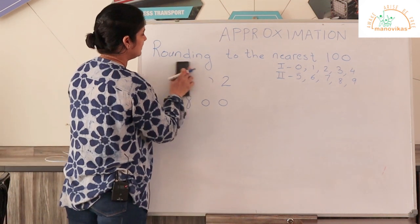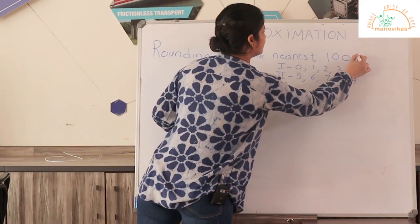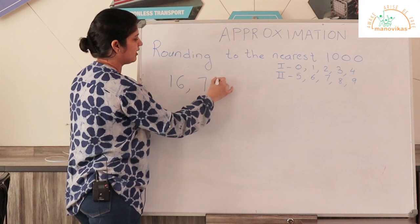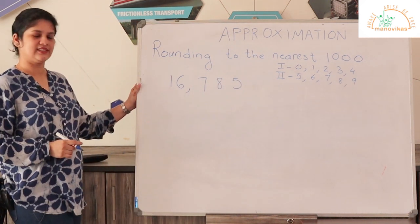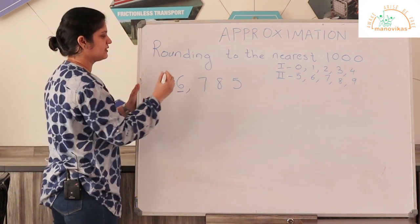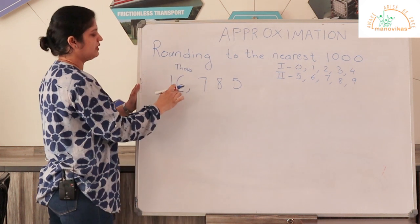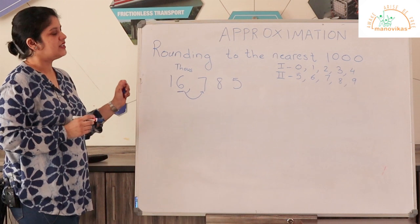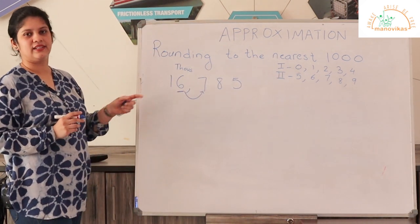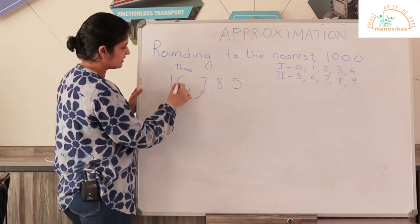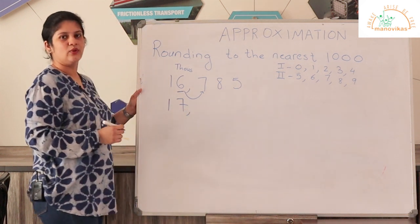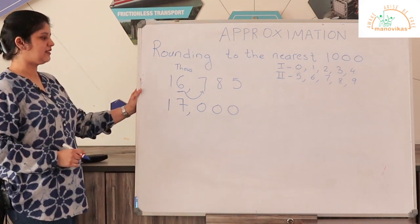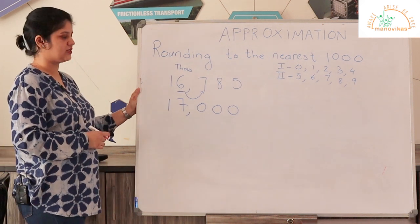Now let us learn how to round to the nearest 1000. Let us take an example: 16785. When we are rounding to the nearest 1000, we have to underline the digit in the thousands place. In this example the digit in the thousands place is 6. The digit next to it is 7. 7 is in the second range, so the number in the thousands place will increase by 1. So 6 will now change into 7. After the thousands place, all the digits will be changed to 0s. So 16785 rounded to the nearest thousand is 17000.